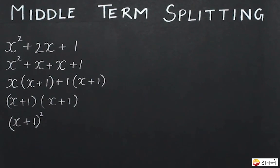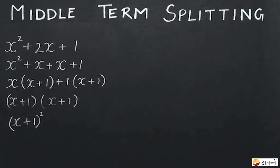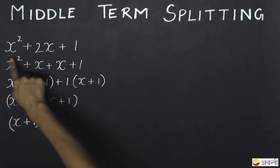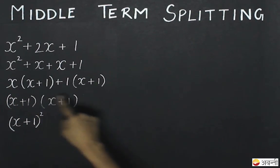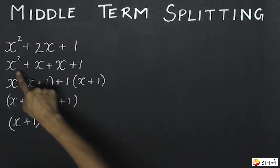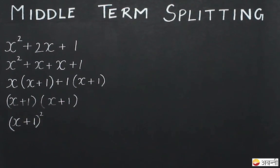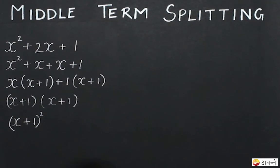In this video, we are going to visualize middle term splitting. I have taken an expression x squared plus 2x plus 1 and with the help of middle term splitting, I have factorized it into x plus 1 whole square. I will try to visualize this with the help of areas.